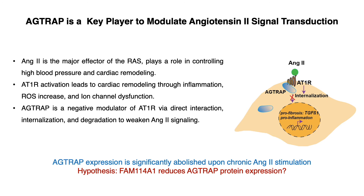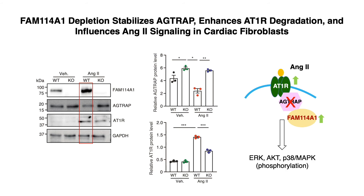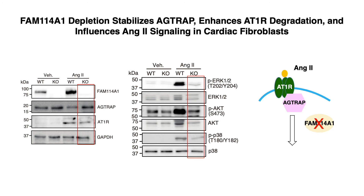We tested the hypothesis that FAN141 may regulate AGTRAP protein expression. We showed that angiotensin II stimulation in cardiac fibroblasts induces FAN141 expression, decreases AGTRAP protein level, and increases AT1R expression, thereby amplifying angiotensin II signaling. Knockout of FAN141 reverses this protein expression pattern, and consequently reduces ERK, AKT, and P38 phosphorylation, suggesting compromised angiotensin II signaling.